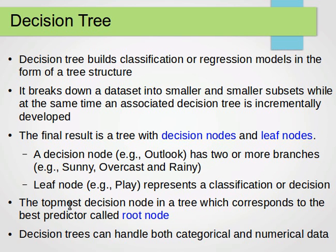The topmost decision node in a tree, which corresponds to the best predictor, is called the root node. Decision trees can handle both categorical and numerical data. If we need to transform, we can use transformation techniques that we learned before in our data exploration and analysis tutorial.